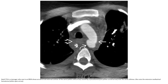CTA in a teenager who sustained a motor vehicle accident shows an abnormal external contour of the aorta caused by a pseudoaneurysm near the aortic isthmus. Also note the extensive mediastinal hematoma.